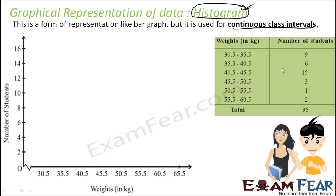We have seen similar examples where we represented data in continuous class interval — continuous frequency class — and done group frequency distribution. So we have 30.5 to 35.5 with 9 students, 35.5 to 40.5 students, and so on.